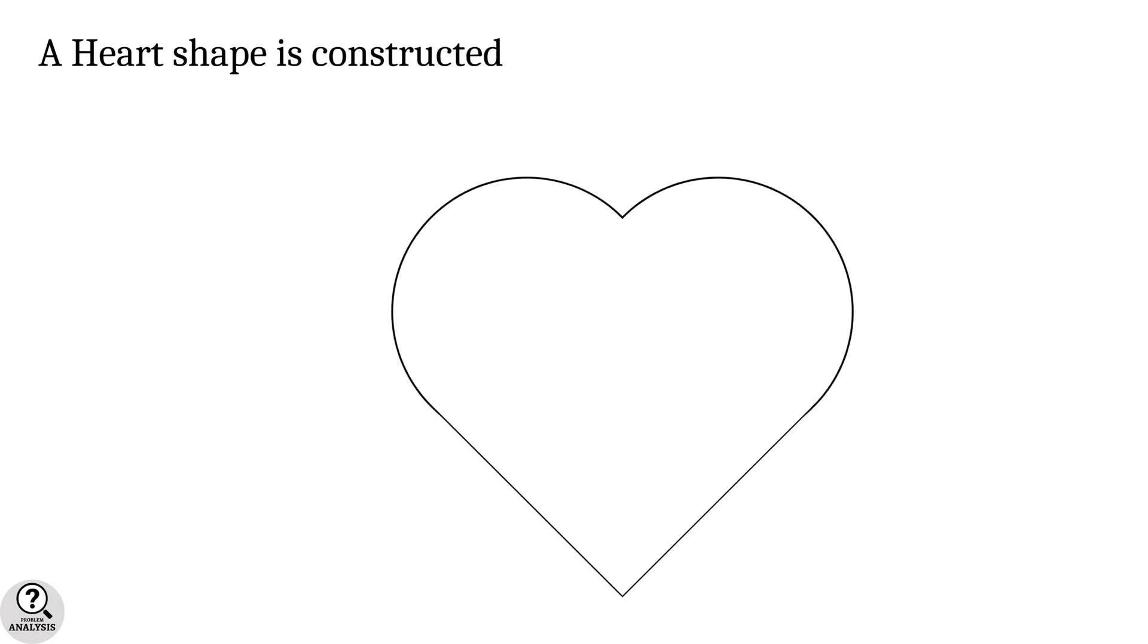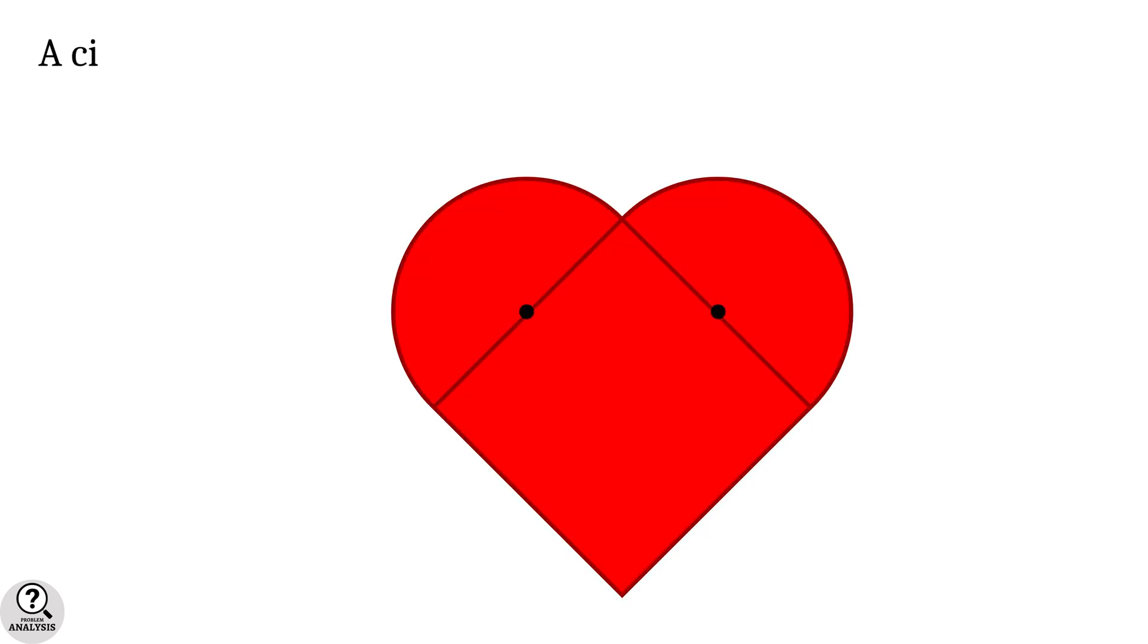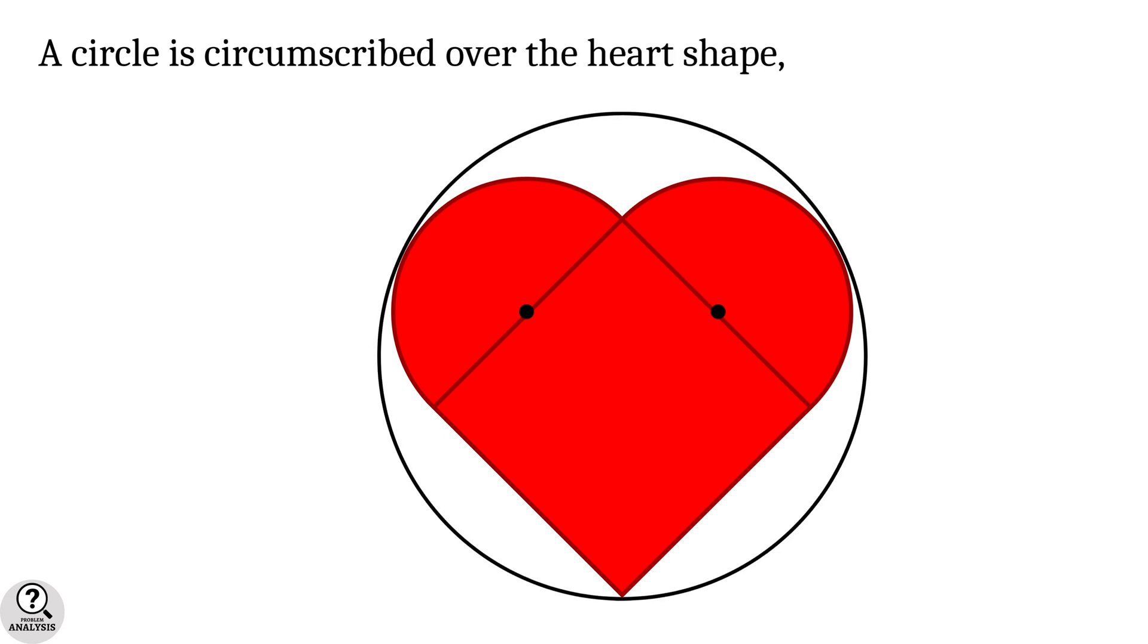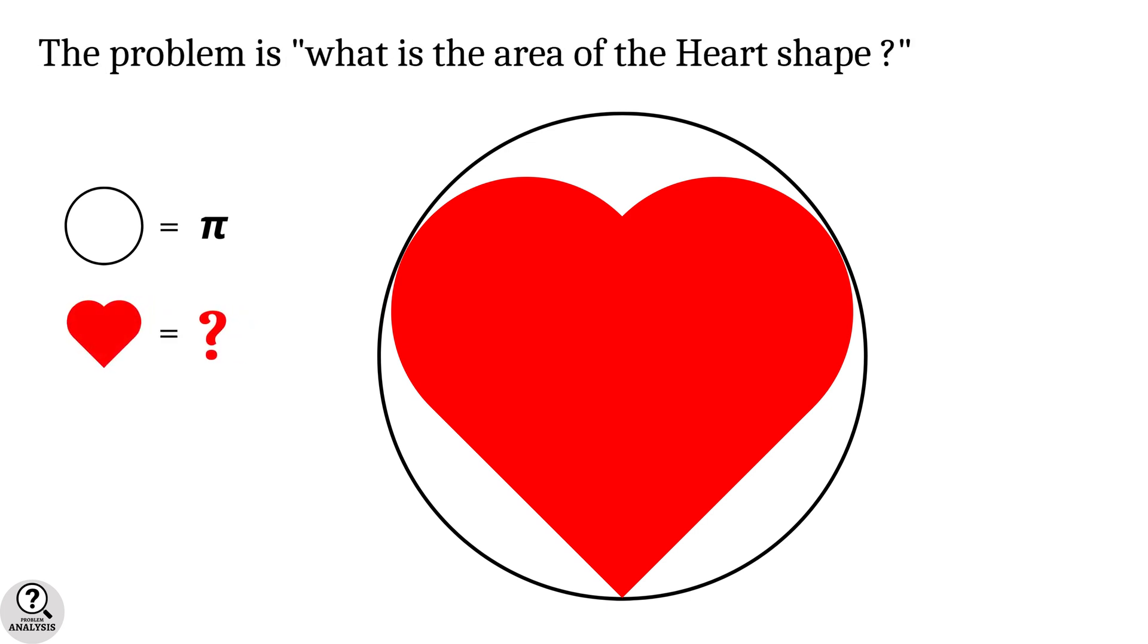A heart shape is constructed using a square and two semi-circles. A circle is circumscribed over the heart shape such that the circle is touching the heart shape at three points. The area of this circle is given as pi square units. Then my problem is, what is the area of this heart shape?